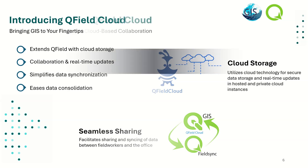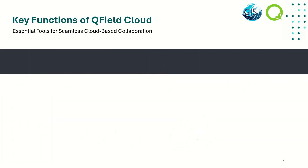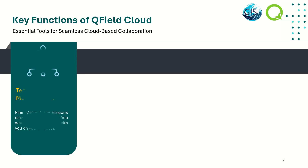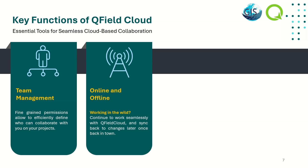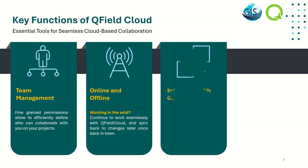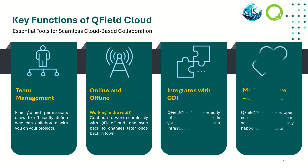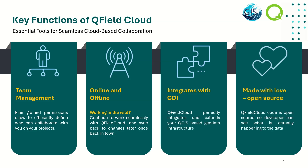QField Cloud integrates seamlessly with QGIS projects, enhancing workflow efficiency. It allows you to bring your QGIS project to the field, where you can work offline and sync updates later. The cloud also supports team management with fine-grained permissions, enabling you to control who has access to your project. This setup ensures that your data is always accessible and up to date.